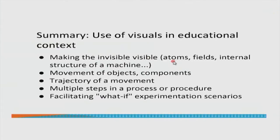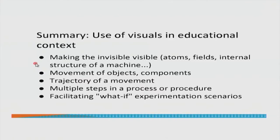For example, when we want to look at how atoms behave in a magnetic property or fields, these are things that are not visible and also not easy to imagine. A visualization helps in these cases to make the invisible visible. Also for the internal structure of a machine — when we want to look at the internal structure, visualization helps to show what is there, which would otherwise be difficult for the teacher to explain and for the student to imagine. Making the invisible visible is a big reason for the use of visualizations.